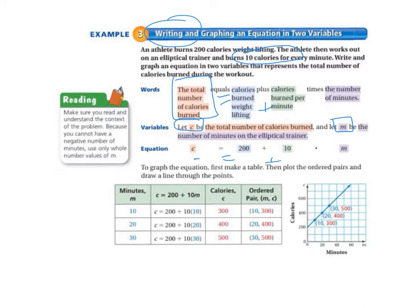So to graph the equation, we first make a table and then we plot the ordered pairs and draw a line through the points. So let's take a look at our table.